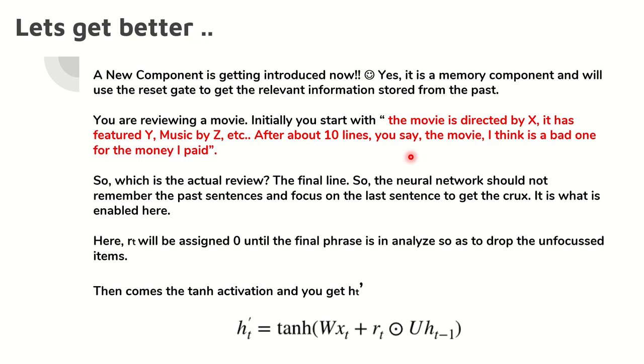So, what is the next step? We are going to add a new component. Yes. We are going to add a memory component which will use the reset gate to get the relevant information stored to be stored from the past. I mean it. We are going to use the reset gate information to do the further processing. Now, I'll tell you an example. You have seen a movie. Say the movie name is ABC. You want to write a review in the Facebook. You are writing the review about the movie. The movie is directed by X. The movie has got actors ABC. The movie has been given photography by this guy, videography by this guy. And all these are the preliminary details you have given for four or five lines. And about the 10th line, when you get into the 10th line, you give the final prediction. You say that the movie is not good at all. It is bad.